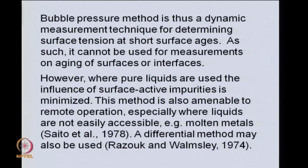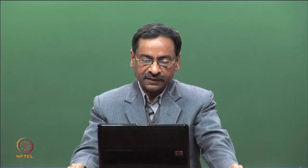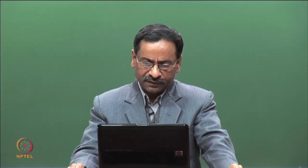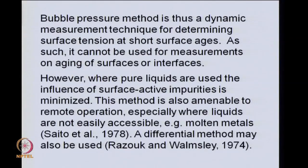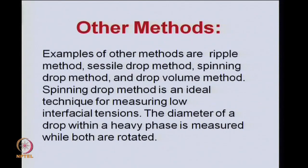This method cannot be used to study aging of surfaces or interfaces, which requires static surface tension measurement. If pure liquids are used, impurities are minimized and the method can be applied reliably. One particular advantage is that you could perform a remote operation — for example, measuring surface tensions of molten metals, which are very high temperature systems you cannot approach. You could remotely operate a capillary through which an inert gas is blown into the molten metal and use the maximum bubble pressure method to measure the surface tension in the dynamic sense.